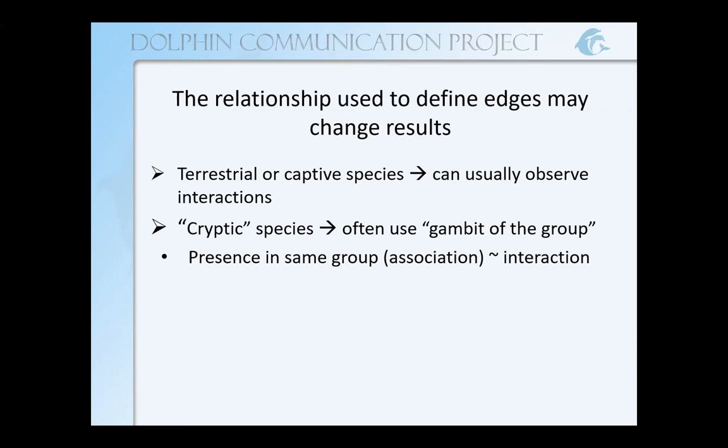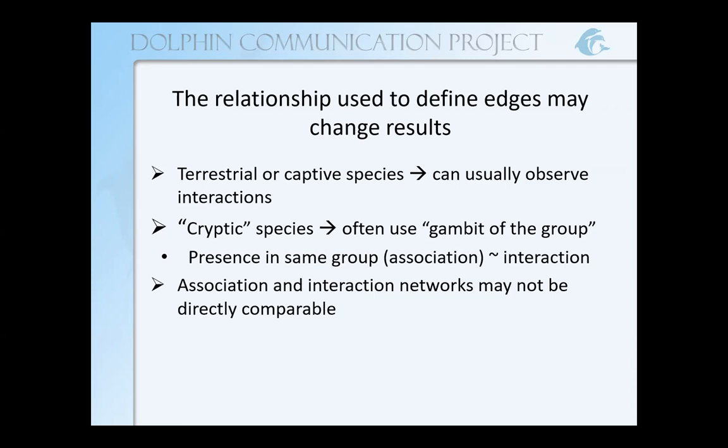There is a little bit of a leap there. If you're thinking about humans, you could have a hundred people in the same office building eight hours a day, five days a week, but that doesn't guarantee that those individuals are all going to interact with each other. So even though they're spending such a large amount of time together, we can't always assume that interaction is going to happen. So our association and interaction networks may not be directly comparable.